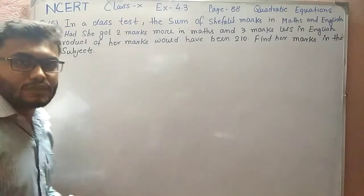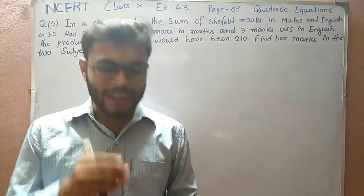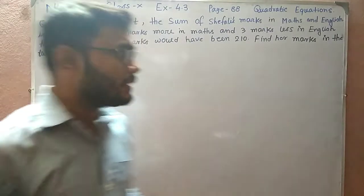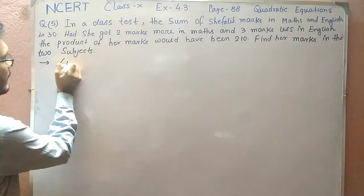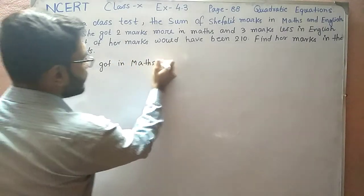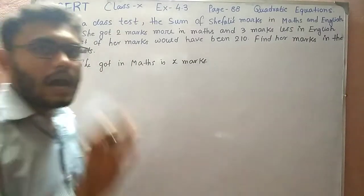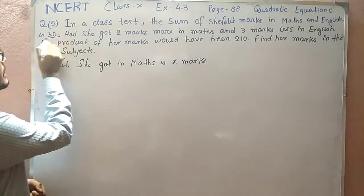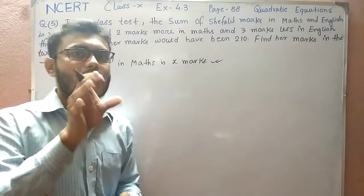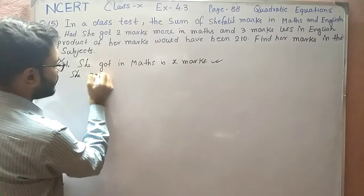We do not know the separate marks in Maths and English, so we have to let them be variables. Suppose she got x marks in Maths. It has been told that the sum of marks in Maths and English is 30, so if Maths marks are x, then English marks would be 30 minus x, because the sum of the two marks should be 30. So she got 30 minus x in English.